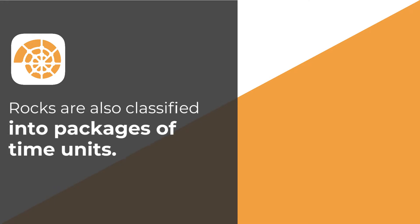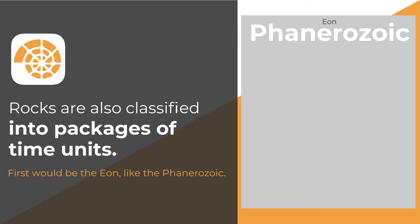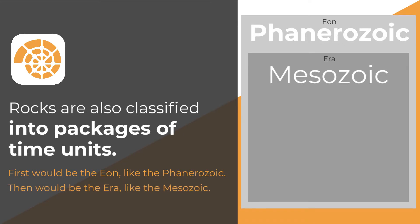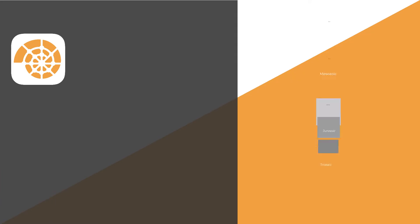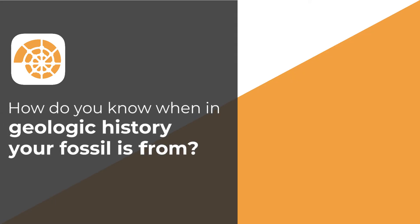Rocks are also classified into packages of time units. First would be the eon, like the Phanerozoic; then would be the era, like the Mesozoic; followed by the period, like the Jurassic. But how do you know when in geologic history your fossils are from?